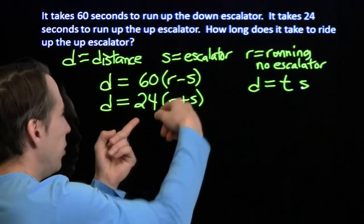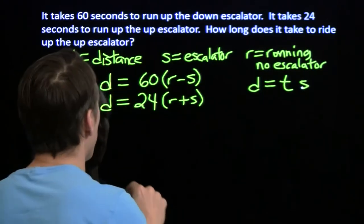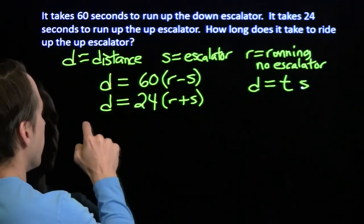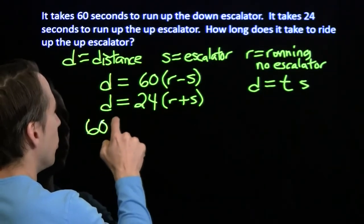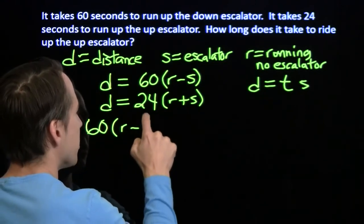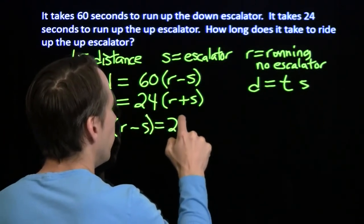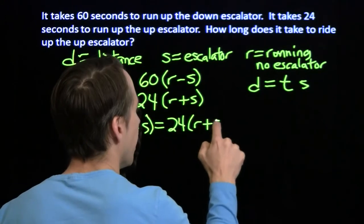Well, we can put these two equations together. We've got two different expressions for d here. We can just set them equal. 60 times r minus s equals 24 times r plus s.